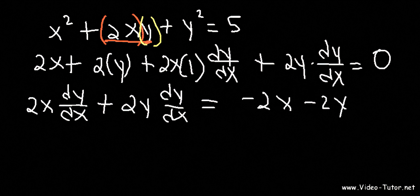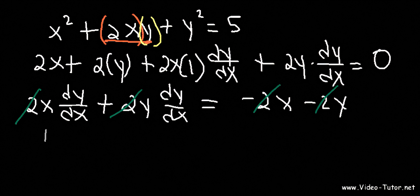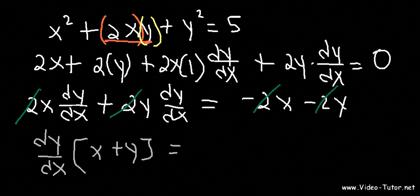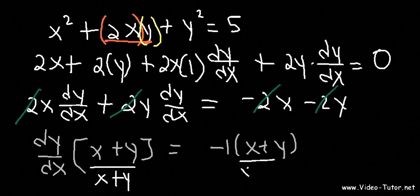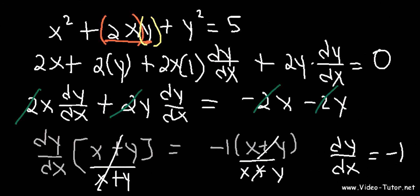What we now have on the left is 2x dy/dx plus 2y dy/dx equals negative 2x minus 2y. There's a lot of 2s here, so let's divide everything by 2. Our next step is to factor out dy/dx. So we're left with dy/dx times (x plus y) equals negative x minus y, which we factor as negative 1 times (x plus y). So now divide both sides by (x plus y) — they cancel — and dy/dx is just equal to negative 1.